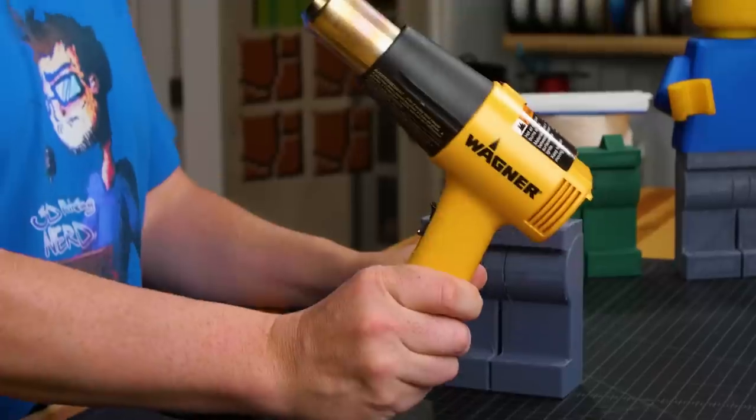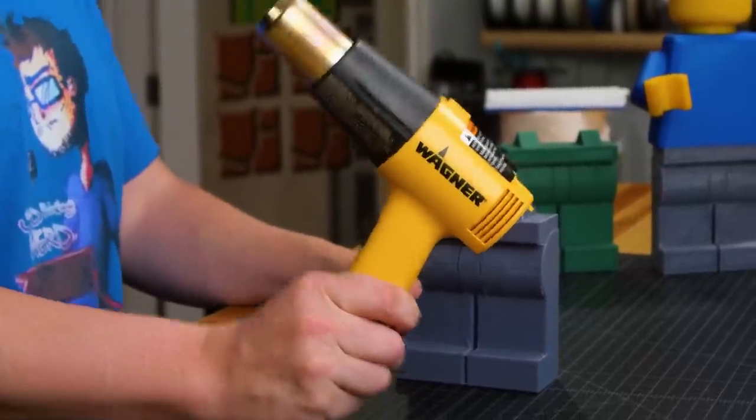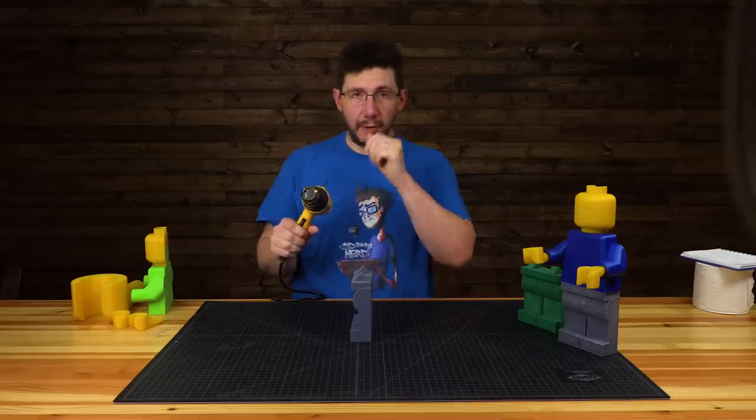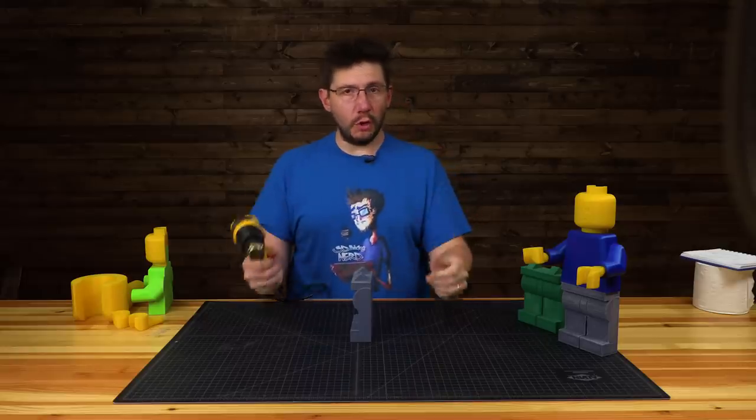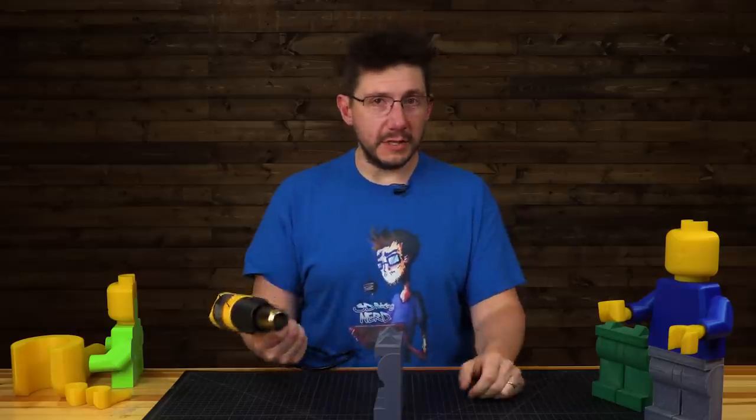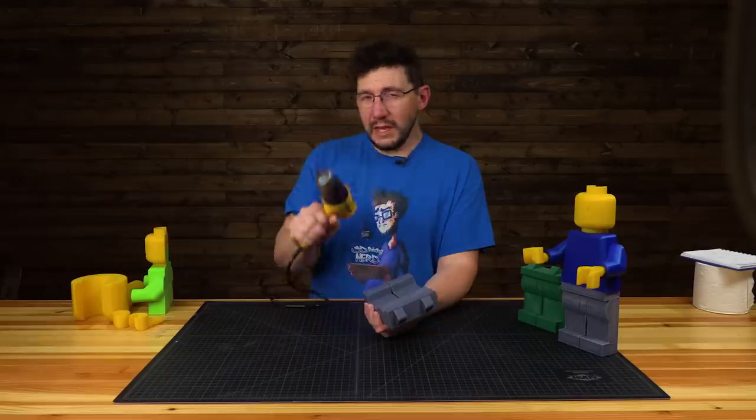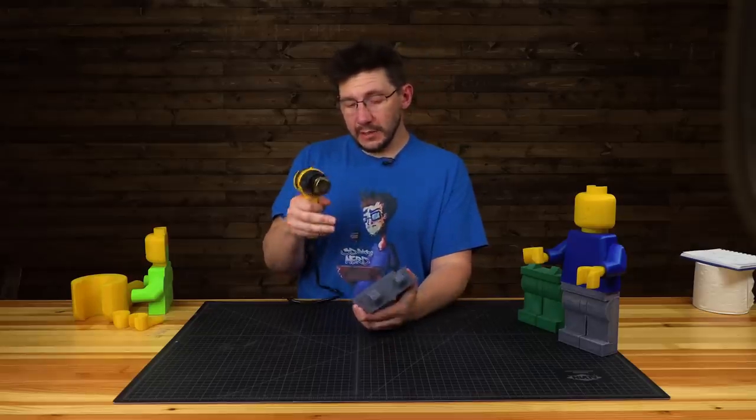A lot of people like to use a heat gun when getting rid of the strings on their prints. I recommend that as well. We have a pile of little PLA strings right here and we have a model that's ready for a bit of heat gun. I'm going to bring out the heat gun - this is a Wagner heat gun I picked it up at my local home improvement store.